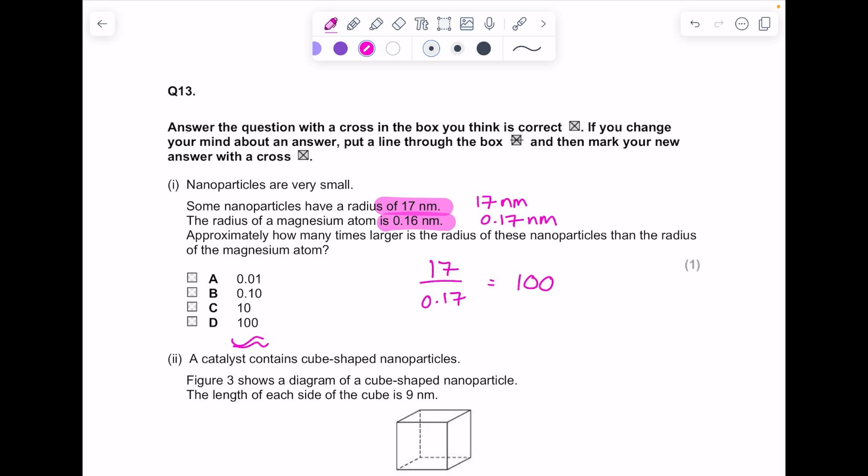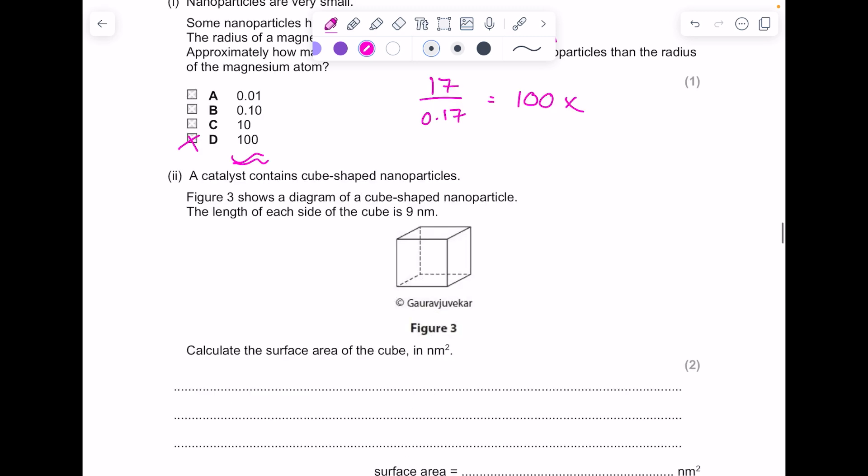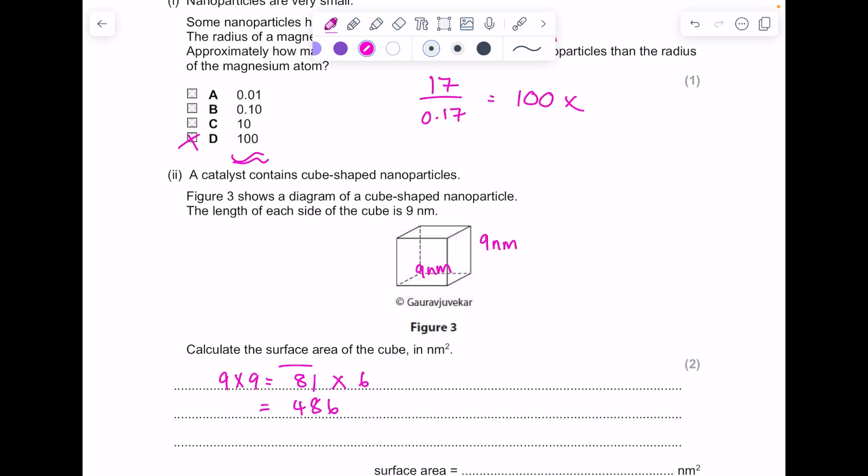The catalyst contains cube-shaped nanoparticles. Figure 3 shows a diagram of a cube-shaped nanoparticle. The length of each cube side is 9 nanometers. Calculate the surface area. We do 9 times 9 to get the surface area of one face of the cube to get 81, and then we know that there are six faces, so our answer here is 486.